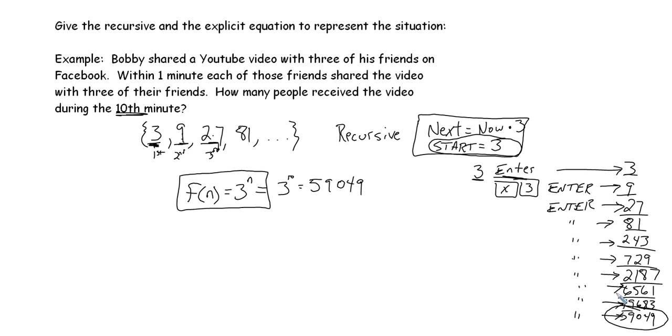You can see here by solving this out, even with the calculator, if you can get the explicit function, especially if you're finding a high element, sometimes we have to find the 45th element in a sequence, it's very helpful to have this explicit equation so that you don't have to type so much in the calculator. We'll see you later.